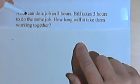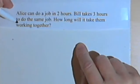Alice can do a job in two hours. Bill takes three hours to do the same job. How long will it take them working together?